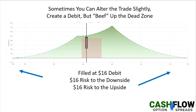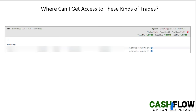Here's a similar trade that was filled at a debit. I did something slightly different with this one to beef up the dead zone, so I actually have an even lower probability of that risk zone emerging because of a slight structural adjustment. It's a $16 debit, meaning I have $16 risk to the downside and $16 risk to the upside. By expiration, this whole profit zone comes down a little bit, but you don't see a sag in the dead zone — the slope is fairly consistent to the upside. The probability of it dropping below zero even on expiration day is almost nothing. I did that by taking the risk and putting it on the outside — either to the downside or to the upside.